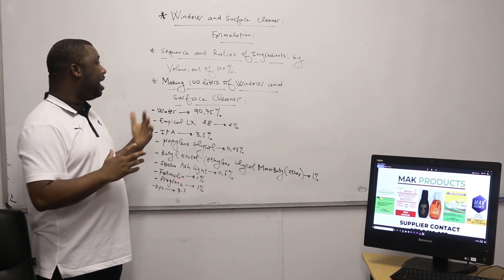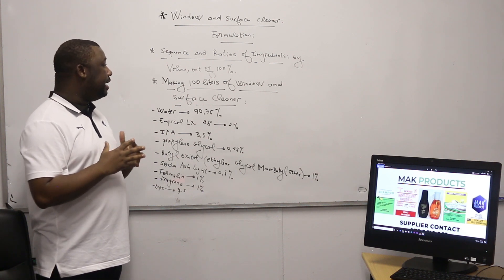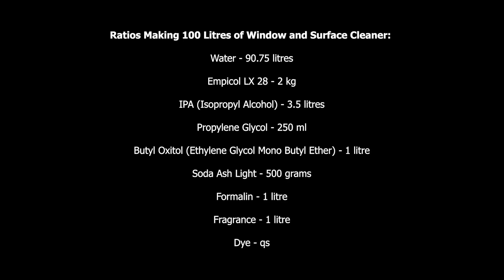For 100 liters of window and surface cleaner, water should be 90.75% of the total volume — that means 90.75 liters of water. The next ingredient, MP call LX28, should be 2% of the total volume, which is 2 liters.